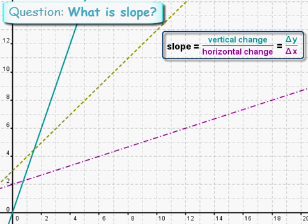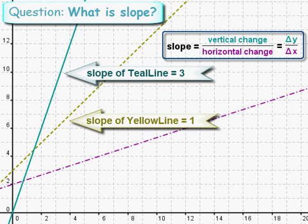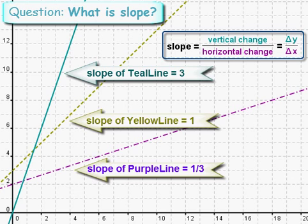So we calculated the slope of these three lines. The slope of teal line was 3, the slope of yellow line was 1, and the slope of purple line was one third.